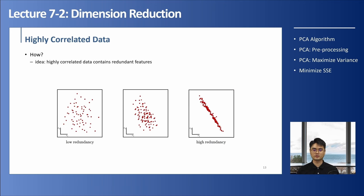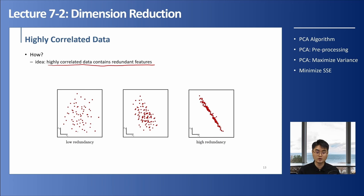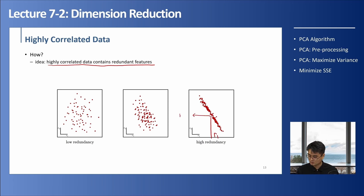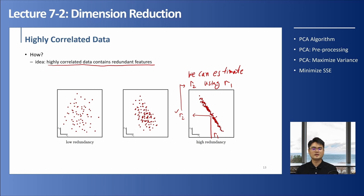The first thing to consider when doing dimensionality reduction is to detect highly correlated data, because highly correlated data contains redundant features. For example, data with low, medium, and high redundancy - if we have R1 and R2 that are highly correlated, we can estimate R2 given R1. So we don't actually need the R2 information. We can reduce that dimension.